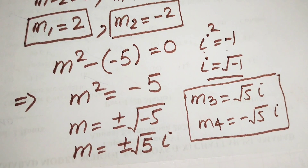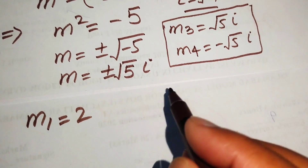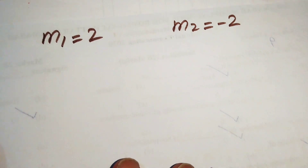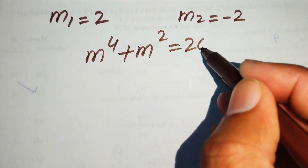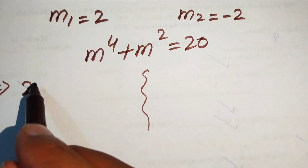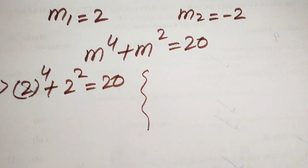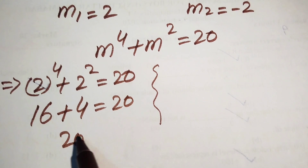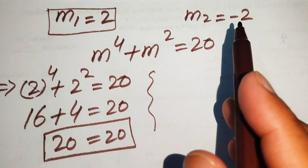These are the total four roots of the given equation. Now we verify the solutions. The first root is m₁ equals 2 and the second root is m₂ equals minus 2. We copy down the given equation: m⁴ plus m² equals 20. Substituting m₁ equals 2: 2 to the power of 4 plus 2 squared equals 20, which gives 16 plus 4 equals 20, and we get 20 equals 20. This confirms that our first root satisfies the given equation.